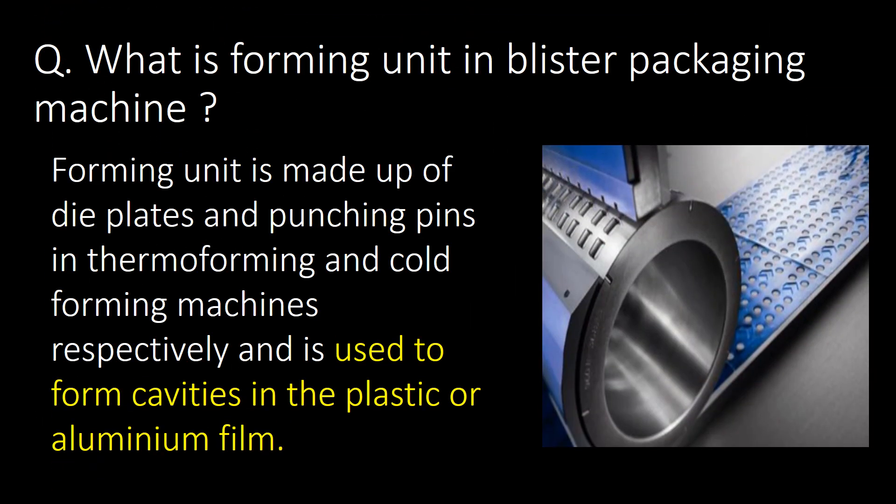What is the forming unit in a blister packaging machine? The forming unit is made up of die plates and punching pins in thermoforming and cold forming machines respectively, and is used to form cavities in the plastic or aluminum film.